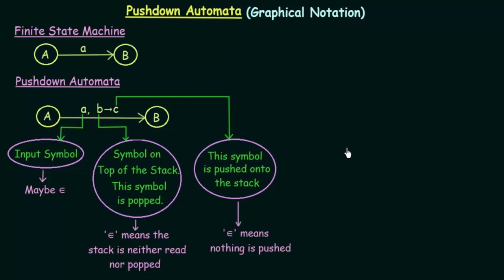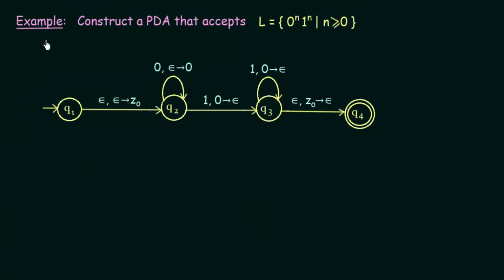Let us see an example to make this clearer. We will construct a pushdown automata that accepts the language 0^n 1^n for all n greater than or equal to 0. This language means the number of zeros should exactly equal the number of ones — if you have n zeros, you must have exactly n ones.